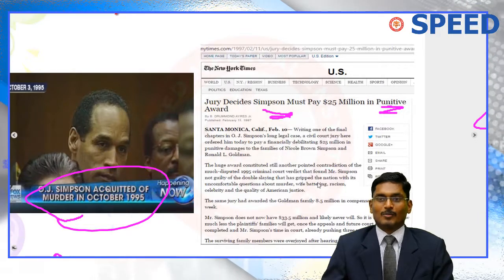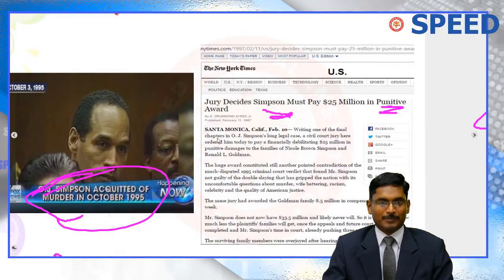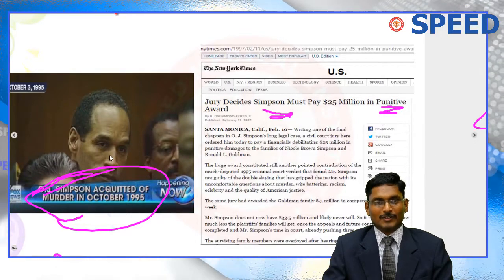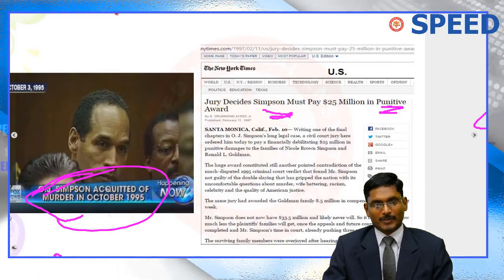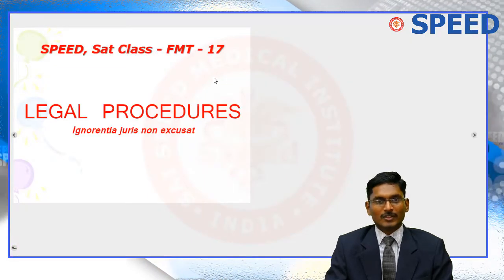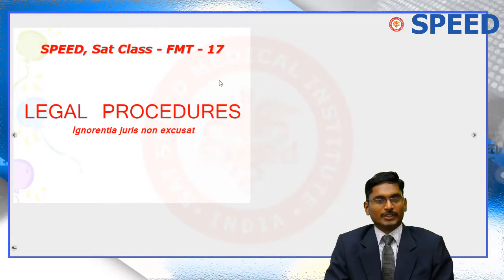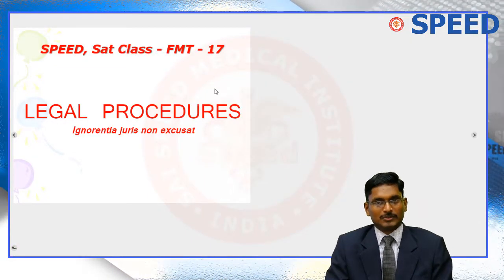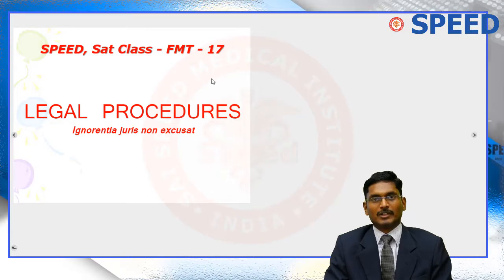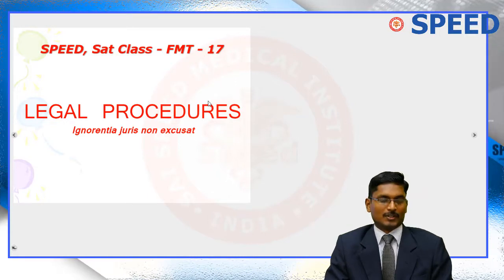How is it possible that the same case with the same evidence leads to a different judgment? To understand that, we enter into the concept of legal procedures.